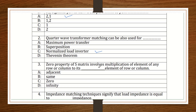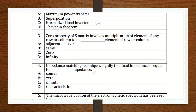Question number 3: Zero property of the S-matrix — it involves multiplication of elements. If you know the properties of the S-matrix, there is a zero property which involves multiplication of elements of any row or column with the corresponding elements of another row or column, and their sum equals zero. This is the zeroth property. If you know the Magic-T, E-plane, and H-plane T derivations, this zeros property is used to solve those.